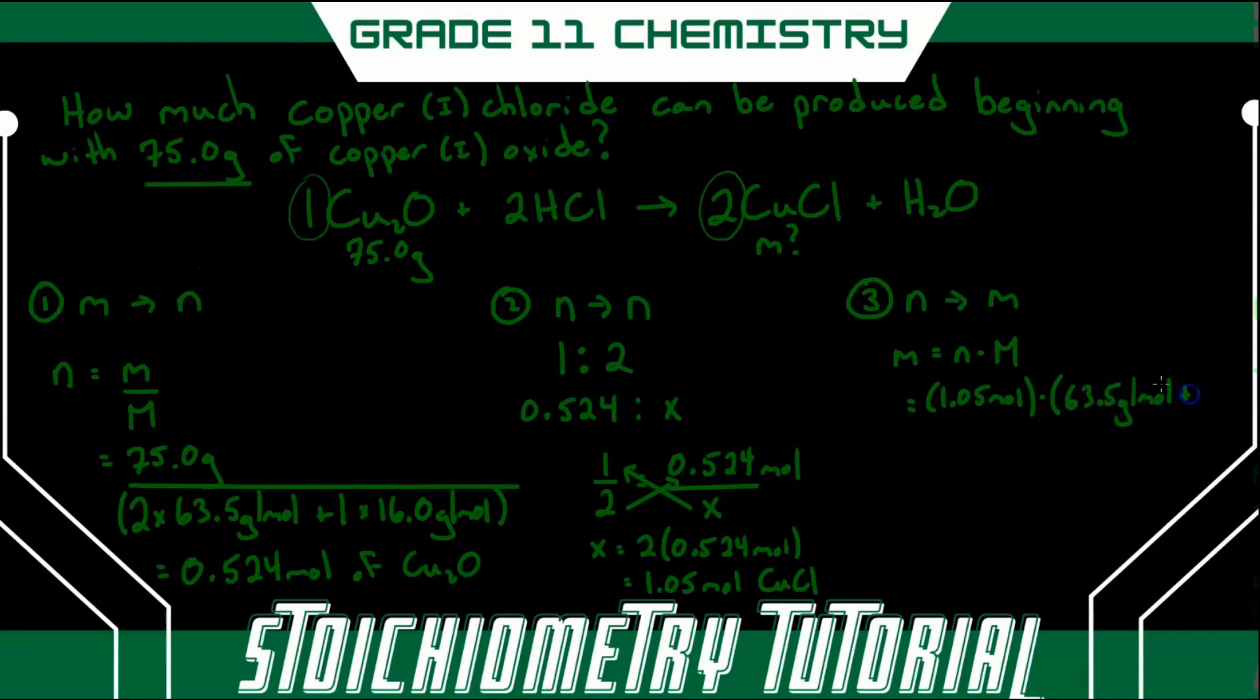Plus one chloride, or chlorine, which is 35.5 grams per mole. So when we punch that into our calculators, we get a mass of 104 grams.